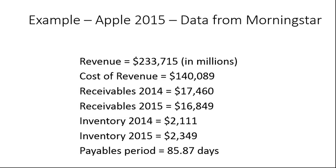Let's take a look at an example using data from Apple, sourced from Morningstar. Revenues are $233.715 billion — all figures are in millions of dollars. The cost of revenues is $140.089 billion. Receivables in 2014 were $17.46 billion and in 2015 were $16.849 billion. Inventory in 2014 was $2.111 billion and in 2015 was $2.349 billion. The payables period, which I looked up, was 85.87 days.